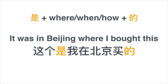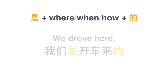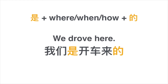这个是我在北京买的 — 'this is something that I bought in Beijing.' 在北京买 is the specific piece of information, wrapped with 是 and 的. Another example: we drove here — we didn't walk, we didn't fly, we drove. So 我们是开车来的 — 开车来 means 'drive come,' and 我们是开车来的 means 'it is by driving that we came here.'